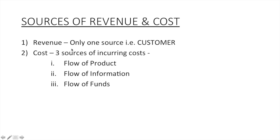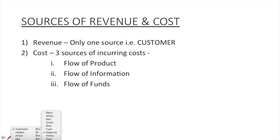Now let's first discuss what are the sources of revenue and costs. It is very obvious — the source of revenue is only one, that is customers. And as we have been emphasizing, the supply chain is the flow of product, information, and funds. So the costs incurred in maintaining these three flows is the total cost of the supply chain.